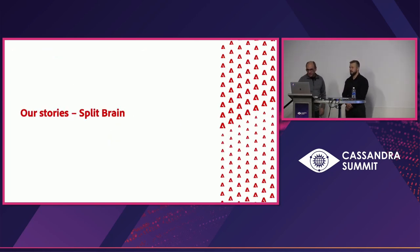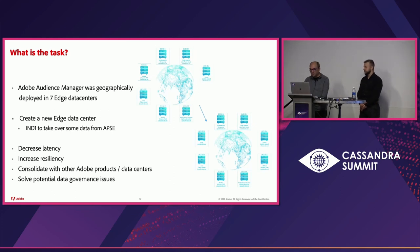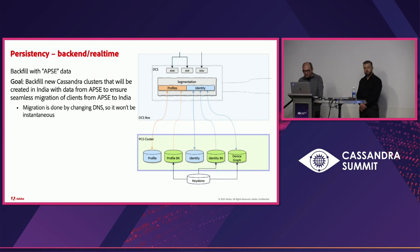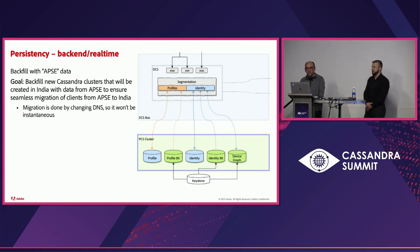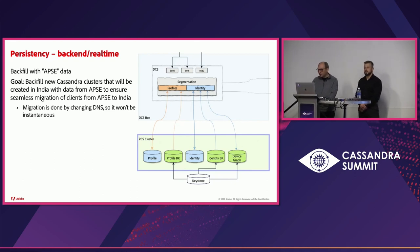Now about how we triggered the split-brain situation. For business-related reasons, we needed to add a new edge data center in India, intended to take over part of the traffic going to the Singapore region without any noticeable disruption. There were several challenges in doing this migration — I will only go through the Cassandra stuff. The goal was to replicate the APSI cluster in the India data center and keep them synchronized during the transition. Since this was triggered through a DNS change, it wasn't going to be instantaneous, so we needed to keep the clusters synchronized during the entire period. Synchronizing the real-time clusters and the backend ones were two very different problems.